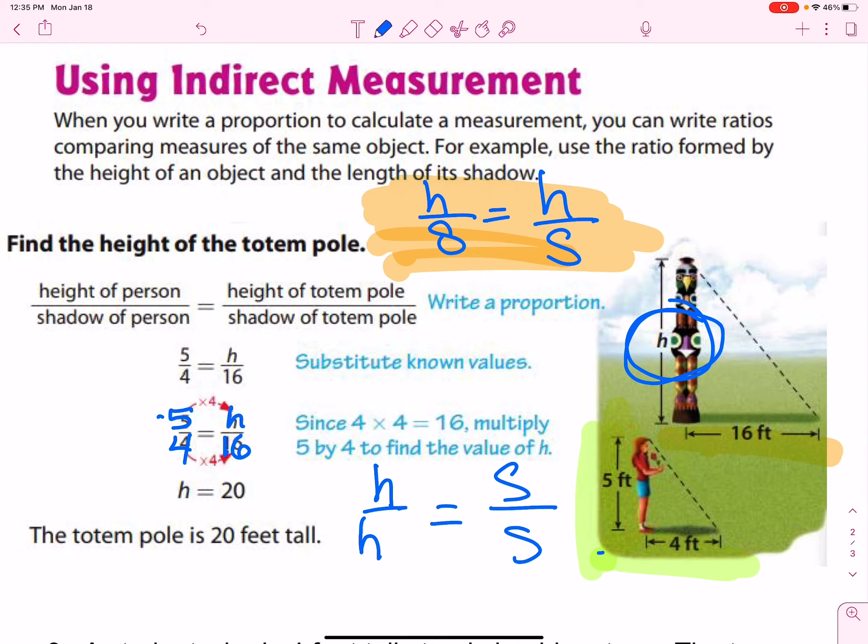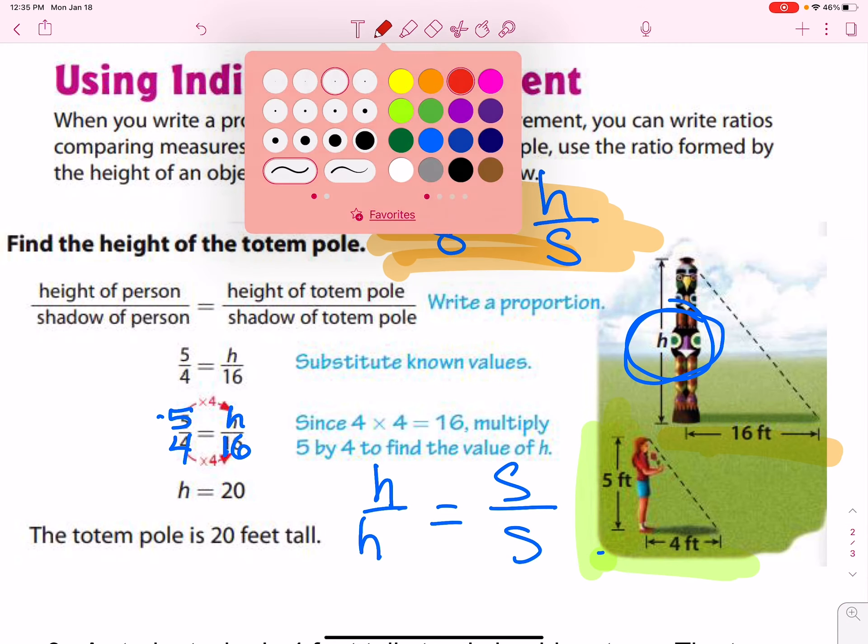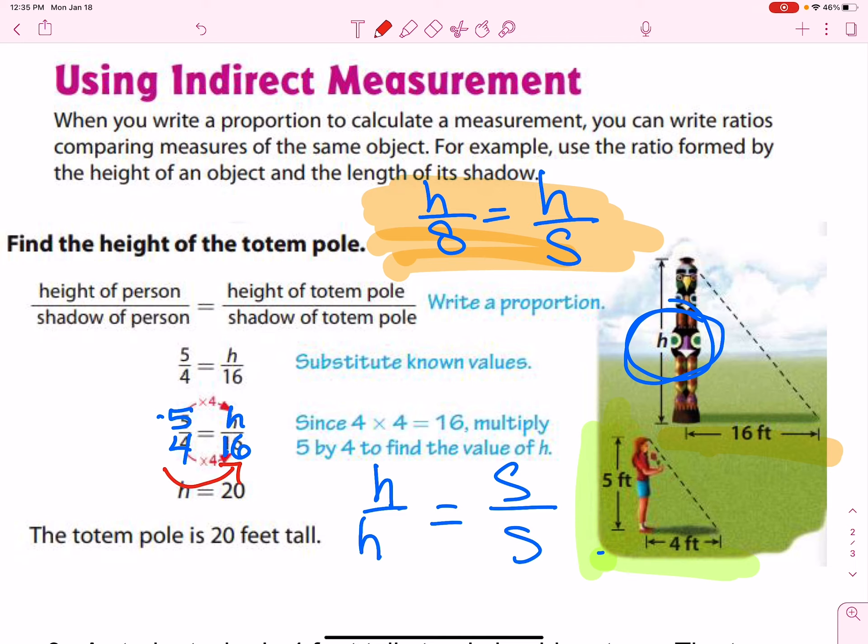We can cross multiply and divide. Or, if you see an easy side-to-side scale factor, in this case, we can tell that this was increased by a factor of four.